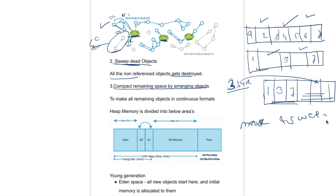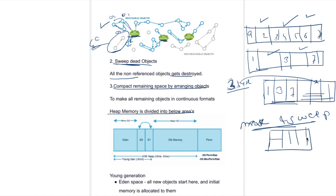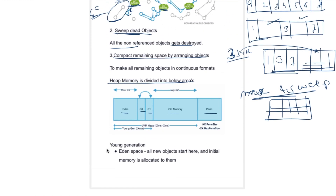All these objects are stored into the heap memory, but heap memory is also divided into sub-partitions. The first partition is Eden space, second is survivor space S1 and S2, third one is old generation, and the last one is permanent generation. We are going to see each of these line by line. Let's start with Eden space.